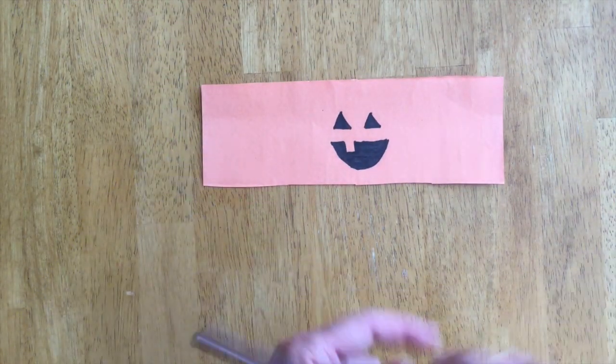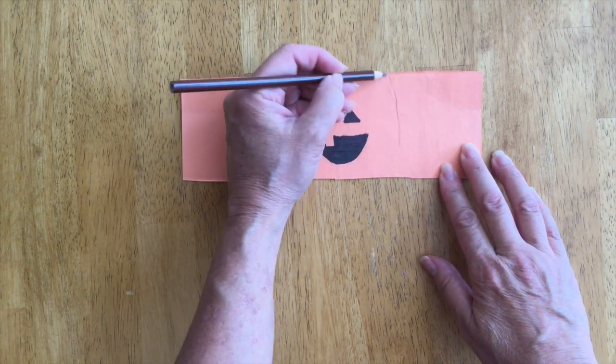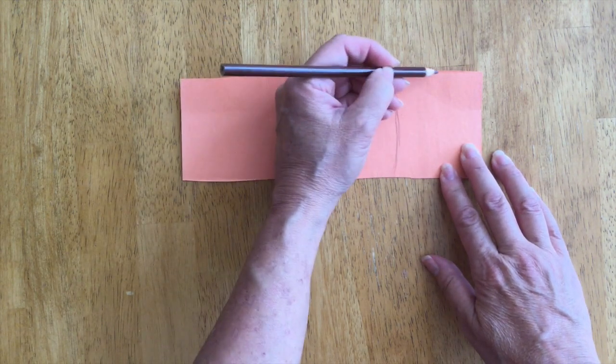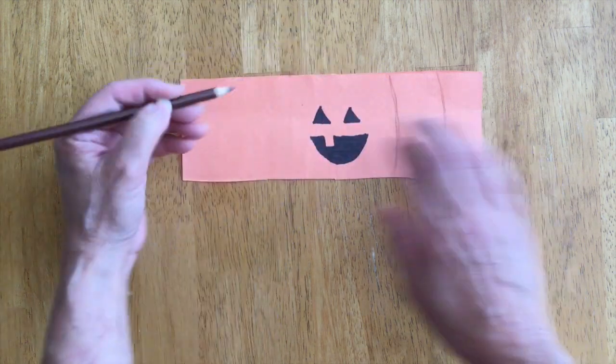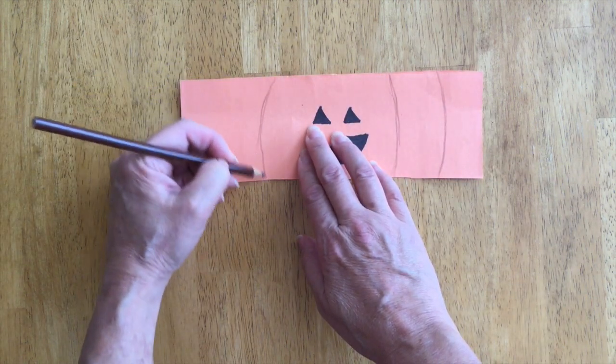So I'll do another one so that you can see. You take your face and then you add the segments. You could just draw lines down because that's what pumpkins look like.